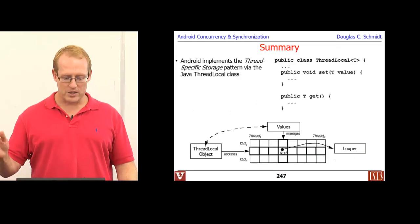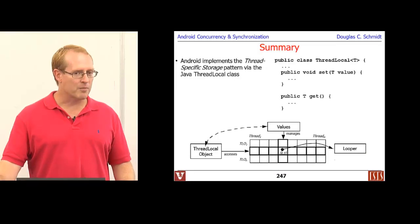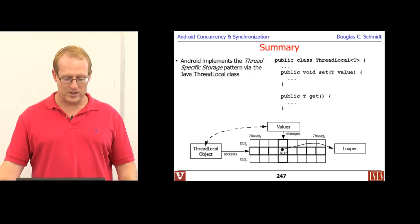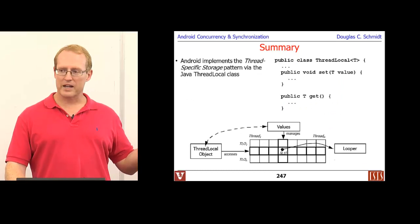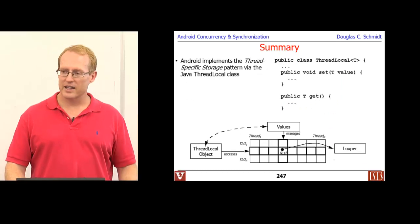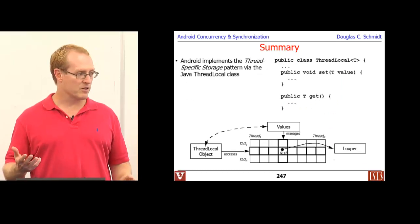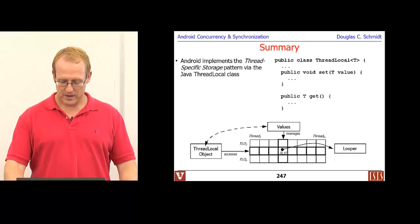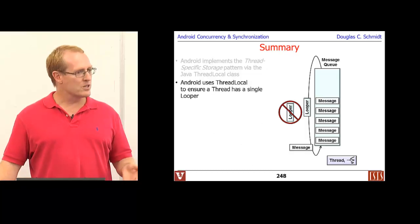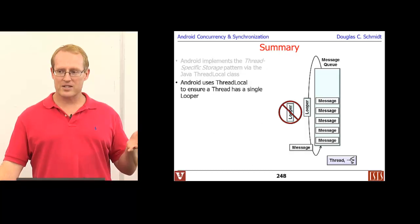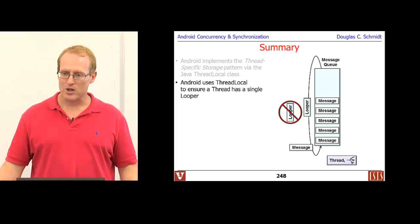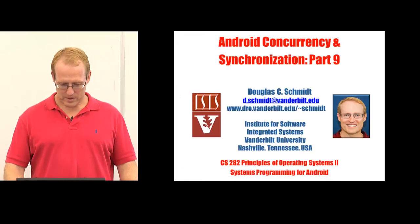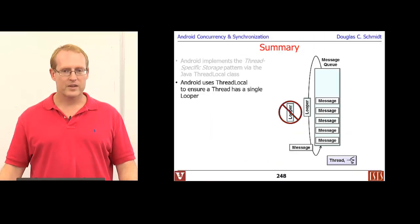To summarize: Android implements thread-specific storage via the Java thread-local class, which doesn't give the full-blown mechanisms of the thread-specific storage pattern but gets most of the way there. Android uses this to ensure only one looper per thread and for handler construction as well.